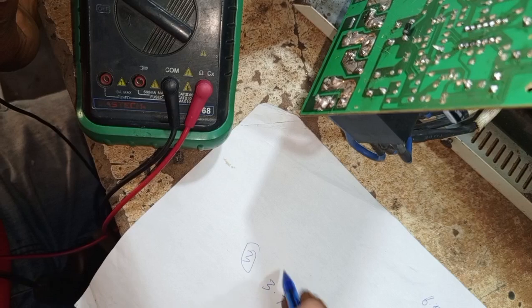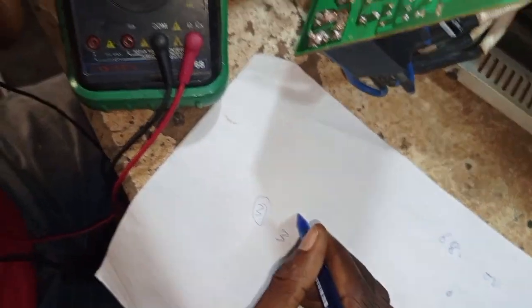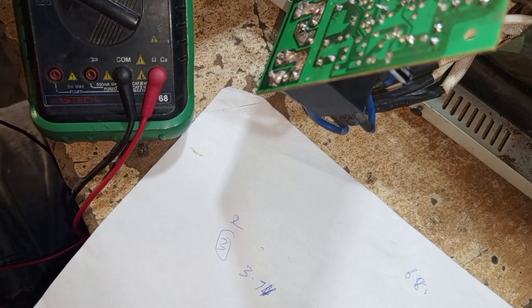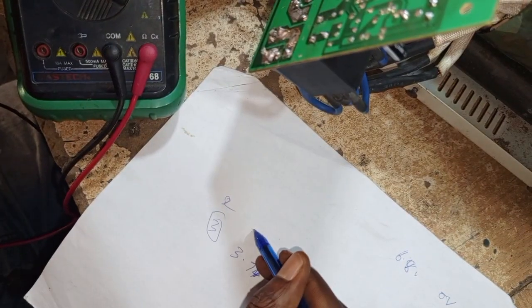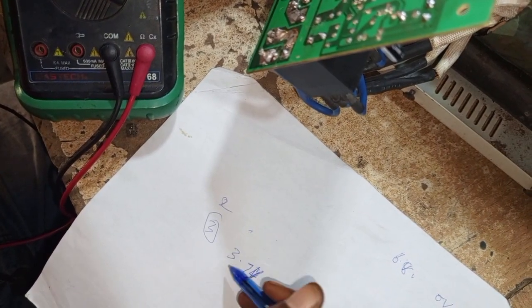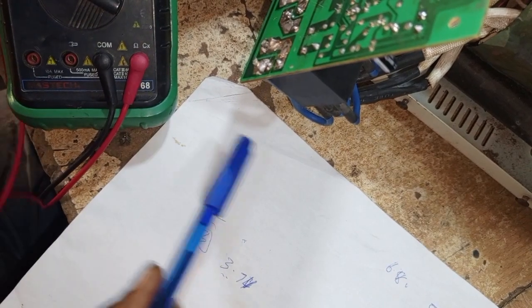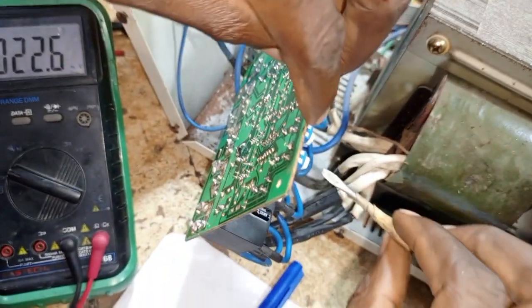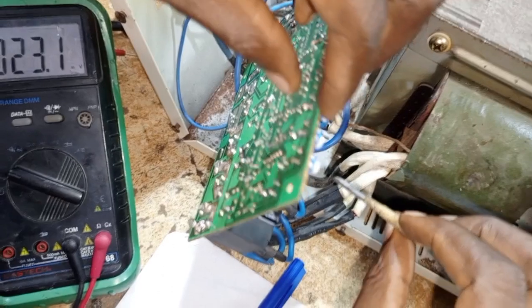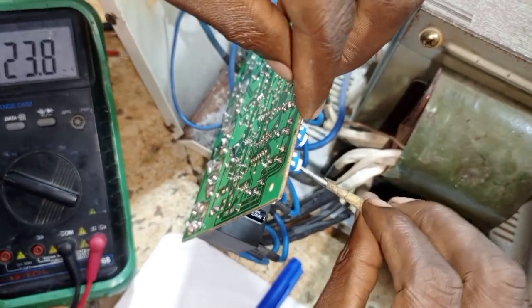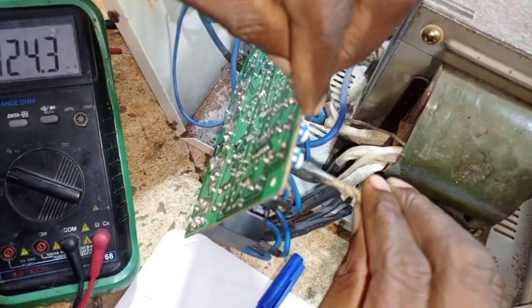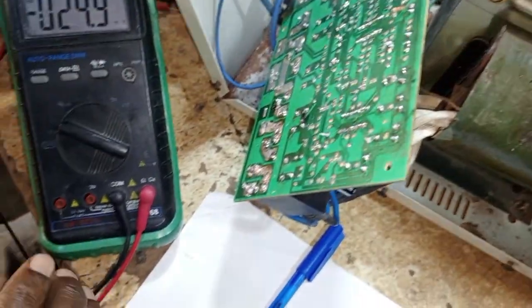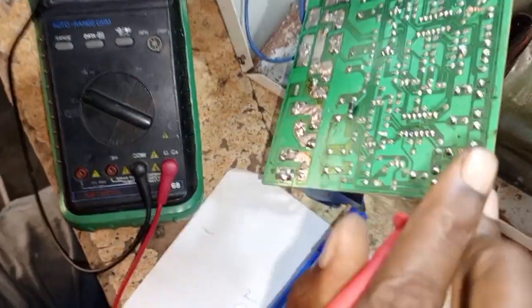For us to get an output, pin 2 must be lower than pin 3. If we don't want an output, we increase pin 2 to be higher than pin 3. Watch as I'm increasing it — when it is higher than that one you will hear the triggering sound.